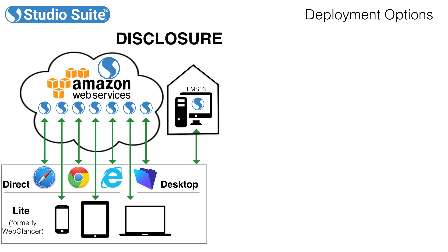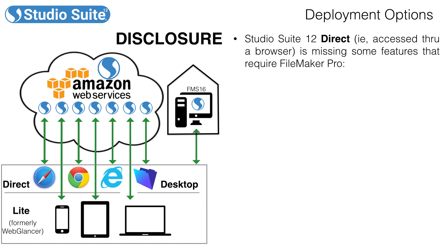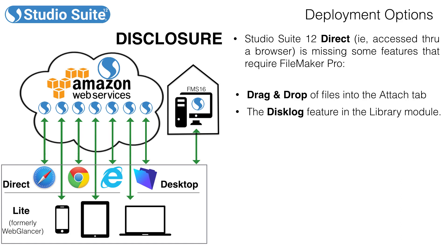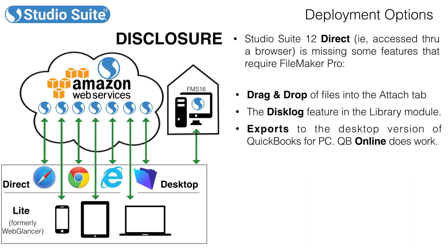A couple quick disclosures. Studio Suite 12 Direct, which means it's accessed through a browser, is missing some features that are only available when accessing from FileMaker Pro. These include drag and drop of files into the Studio Suite attach tab in each module — you can still select files from a chooser, you just can't drag and drop them into the window. Similarly, the disk log feature in the library module requires full access to your hard drive, something a browser just doesn't have. Connection to the desktop version of QuickBooks for PC is also not possible through a browser, but connection and exports to QuickBooks Online is available in Studio Suite Direct.